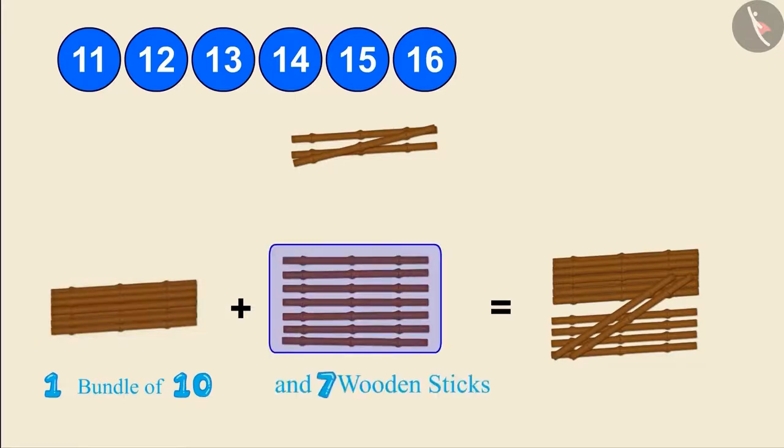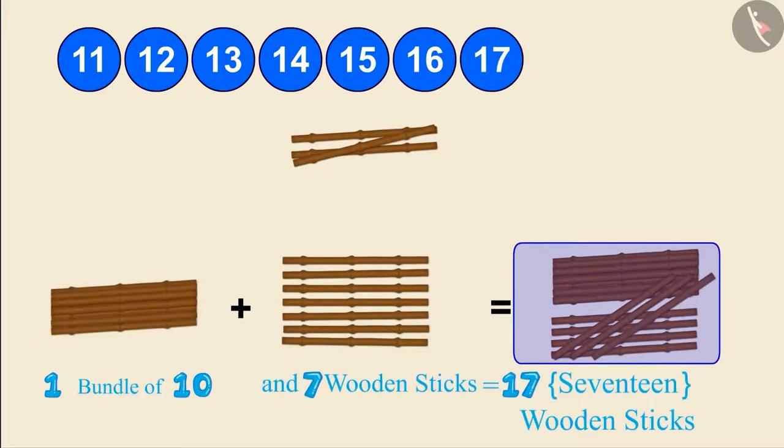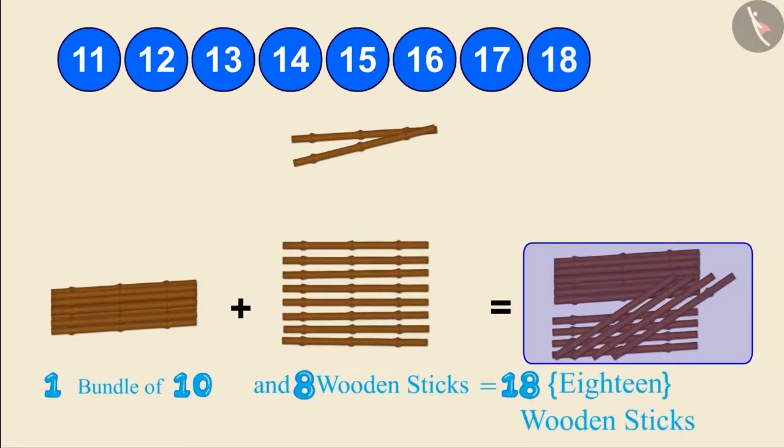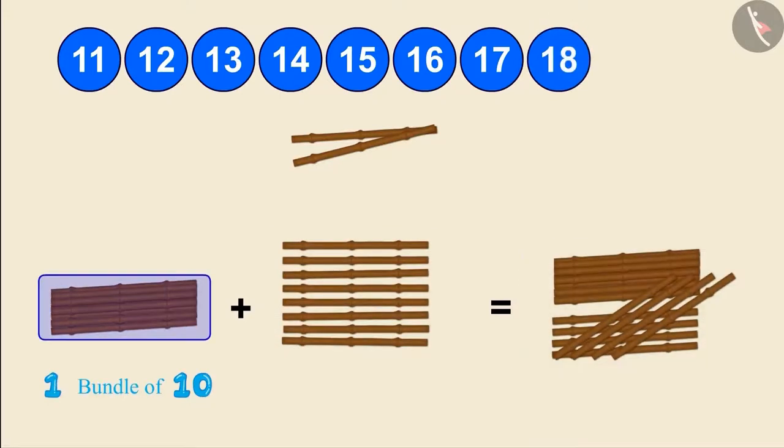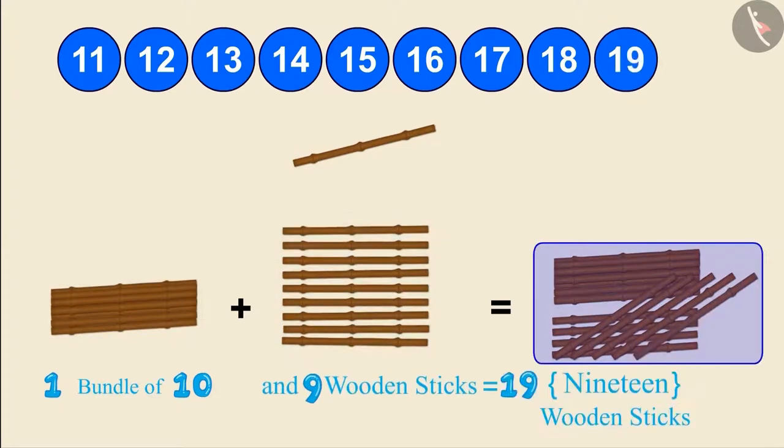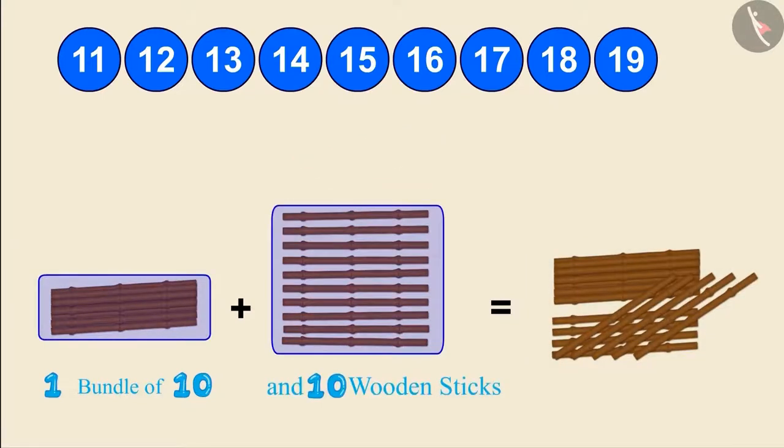One bundle of 10 and seven wooden sticks make 17 wooden sticks. One bundle of 10 and 8 wooden sticks make 18 wooden sticks. One bundle of 10 and 9 wooden sticks make 19 wooden sticks. And 1 bundle of 10 and 10 more wooden sticks make 2 bundles of 10, and that makes 20 wooden sticks.